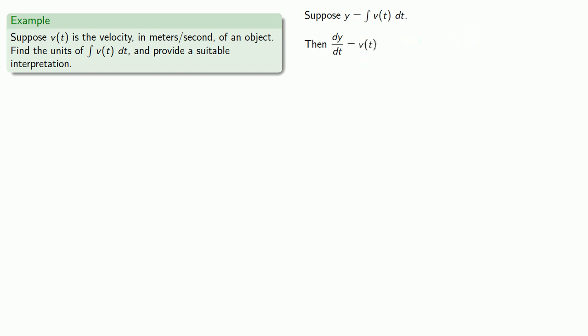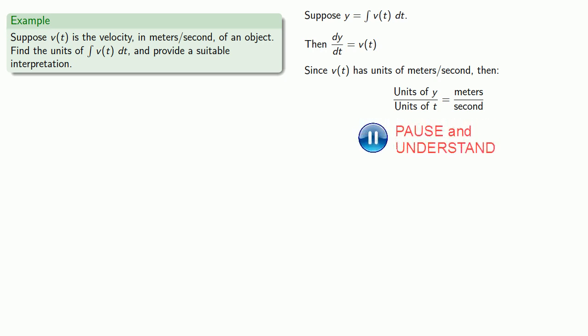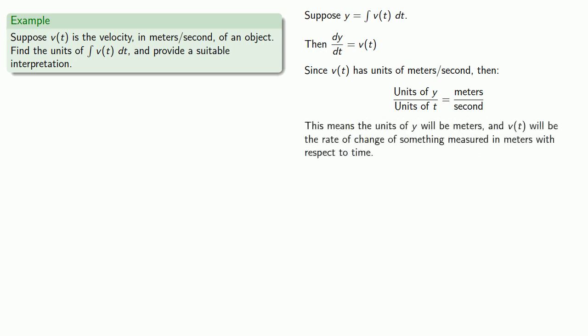And since v of t has units of meters per second, the units of the derivative will be the units of y over the units of t — that will be meters over seconds. This means the units of y will be meters, and v of t will be the rate of change of something measured in meters with respect to time.